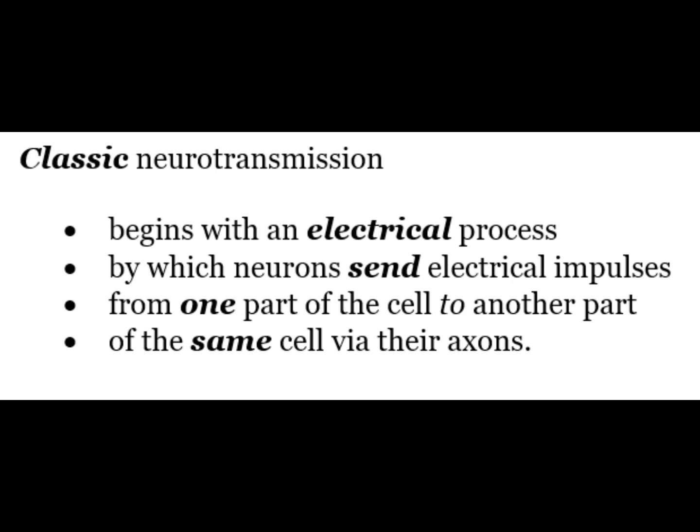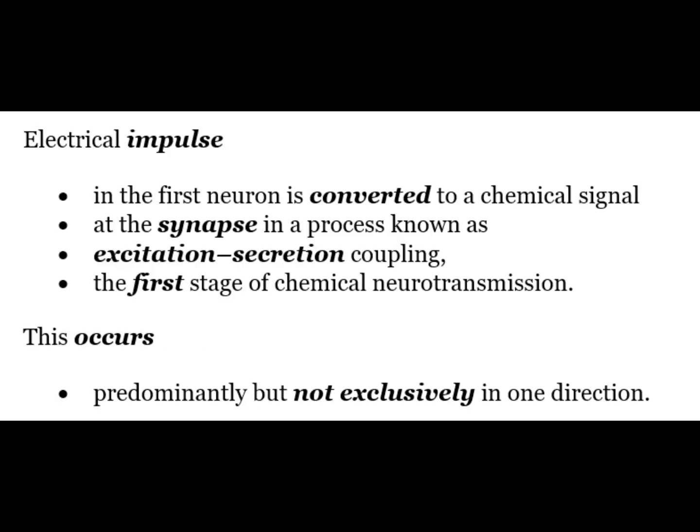Neurotransmission can be classic, retrograde or volume. The classic neurotransmission begins with an electrical process by which the neurons send electrical impulses from one part of the cell to another part of the same cell via their exons. These electrical impulses in the first neuron are converted to a chemical signal at the synapse in a process known as excitation-secretion coupling, the first stage of chemical transmission, which occurs predominantly but not exclusively in one direction.